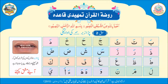با زبر — با۔ تا زبر — تا۔ ثا زبر — ثا۔ ب، ت، ثا۔ جیم زبر — جا۔ ح زبر — حا۔ خ زبر — خا۔ جا۔ خ، دا زبر — دا۔ ذا زبر — ذا۔ را زبر — را۔ زا زبر — زا۔